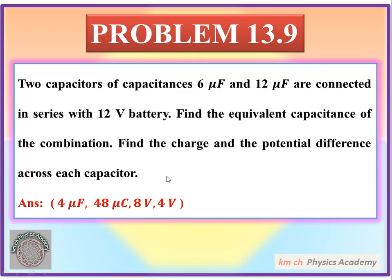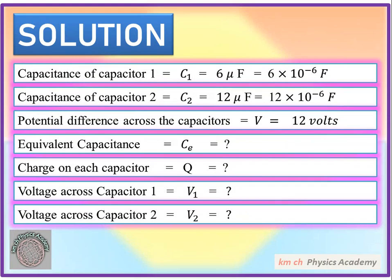The given data: capacitance of capacitor 1, C1 = 6 microfarad = 6×10⁻⁶ F. Capacitance of capacitor 2, C2 = 12 microfarad = 12×10⁻⁶ F. Potential difference across the capacitors V = 12 volts. We have to find: equivalent capacitance Ce, charge on each capacitor Q, voltage across capacitor 1 (V1), and voltage across capacitor 2 (V2).